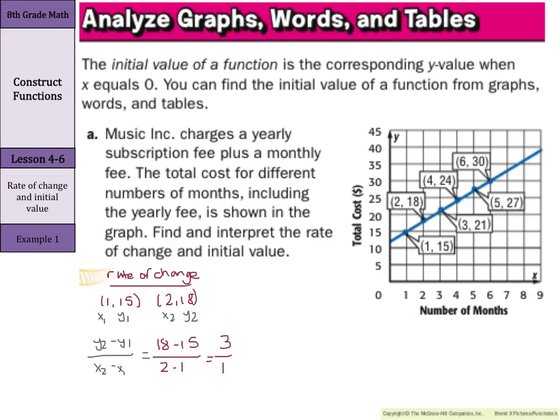What is this rate of change? This rate of change is a monthly fee. So the monthly fee is three dollars. As you look it's the number of months and the total cost. Each month goes up three dollars as you can see. That must be the monthly fee.